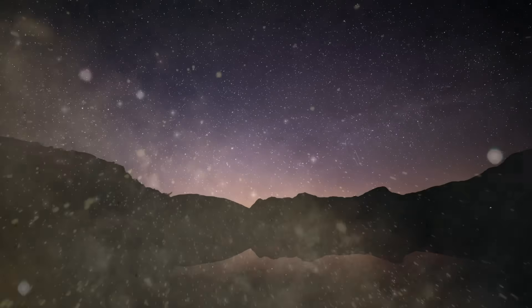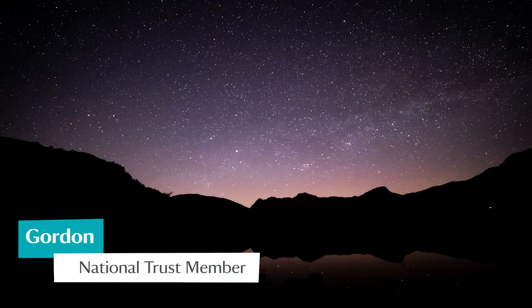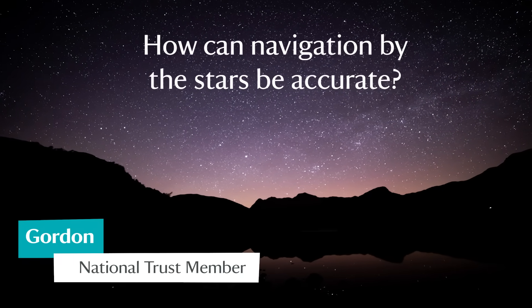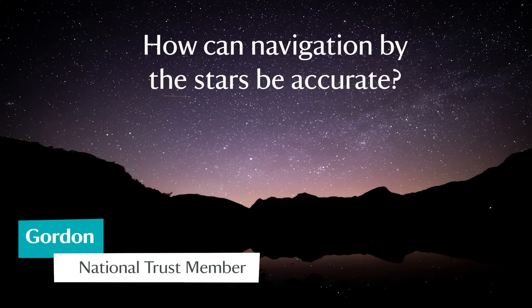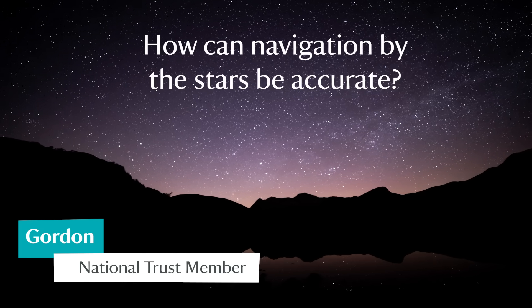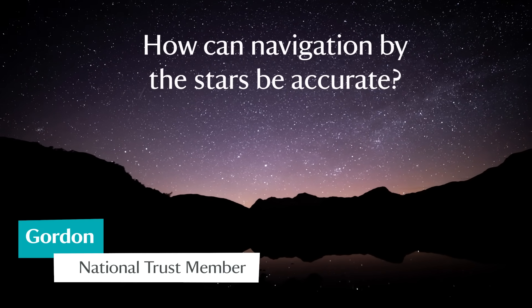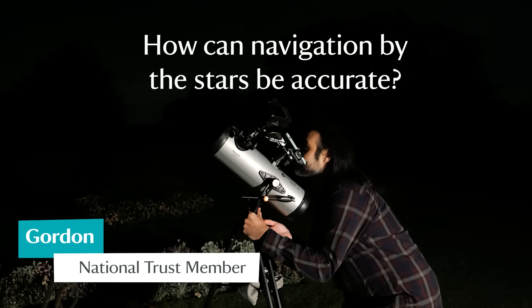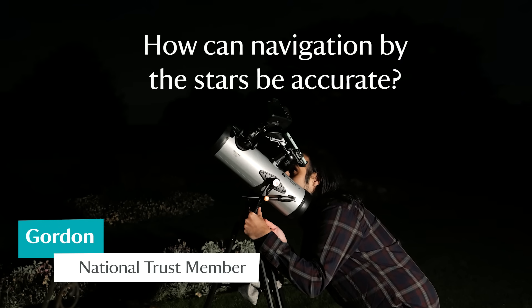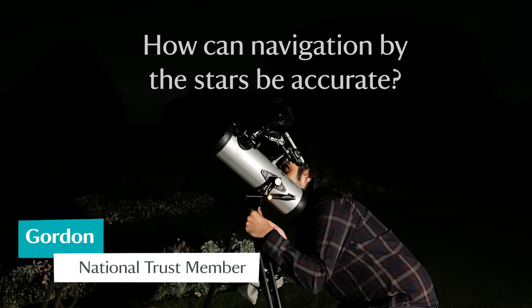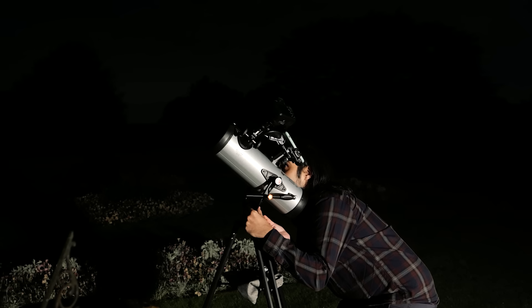As planet Earth constantly moves, how can navigation by the stars be accurate? The constellations continually move throughout the night. So, for instance, the North Star cannot point to the North all night. How is it done?